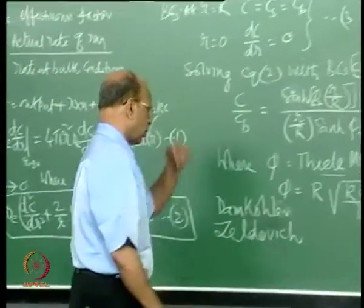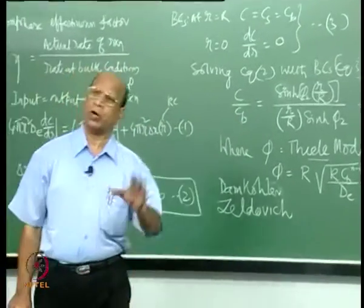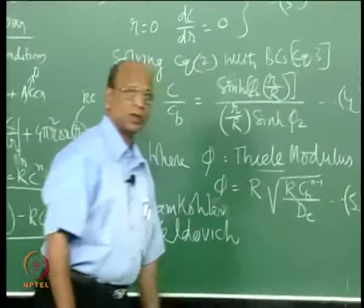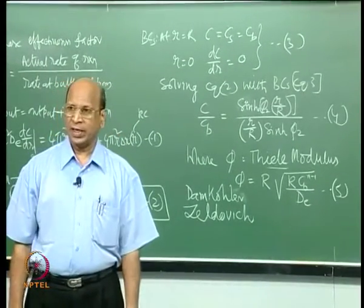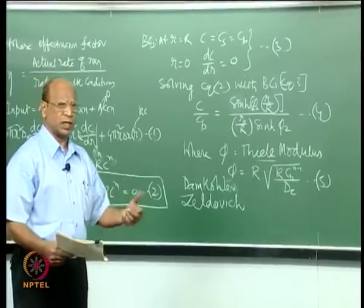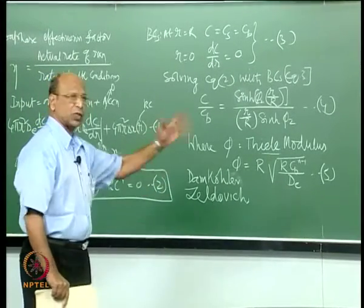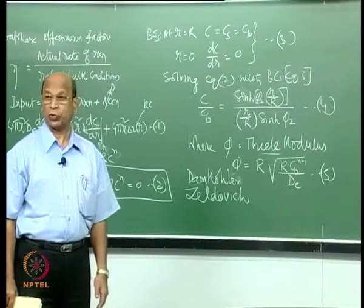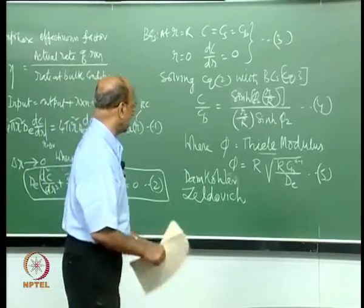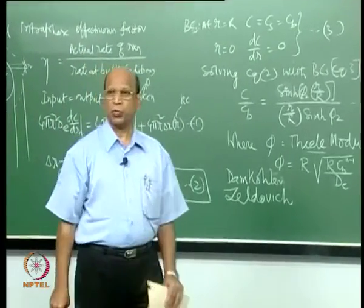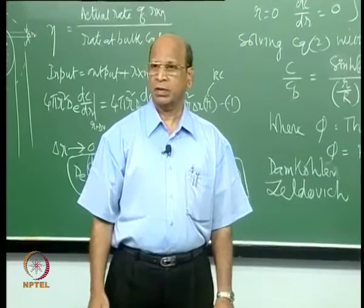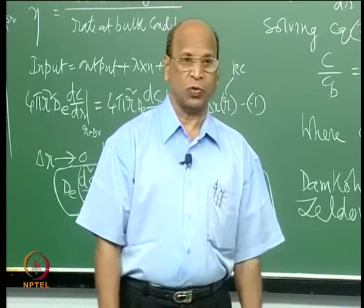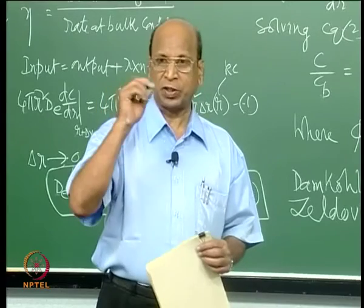For φ beyond 10, you are in a very strong diffusional regime. Effectiveness factors can fall to 0.1, 0.05, or even 0.01. This means only one percent of the surface area is being used for reaction. This happens when the reaction is so fast that reactant molecules react the moment they reach the surface — they never penetrate into the pores.